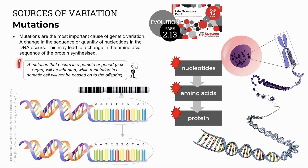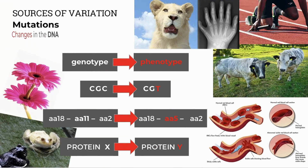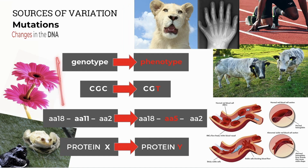Mutations must occur in gametes — the sex cells — or gonads — the sex organs, the testes or ovaries — to be passed on and inherited by offspring. These mutations or changes in the DNA or genotype can cause changes in physical features or the phenotype, as determined by proteins. For example, a lack of melanin pigment causes albinism, or abnormal floral structures, or excess muscle bulk in animals or humans.